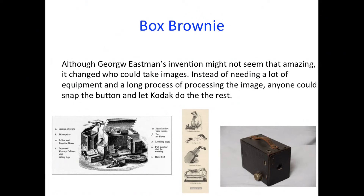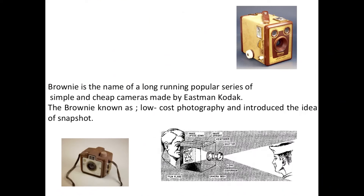The Box Brownie — also George Eastman's invention — might not seem that amazing. Anyone who could take an image, instead of needing a lot of equipment and a long process for processing the image, could just snap the button and let Kodak do the rest. Brownie is the name of the long-running popular series of simple and cheap cameras made by Eastman Kodak.